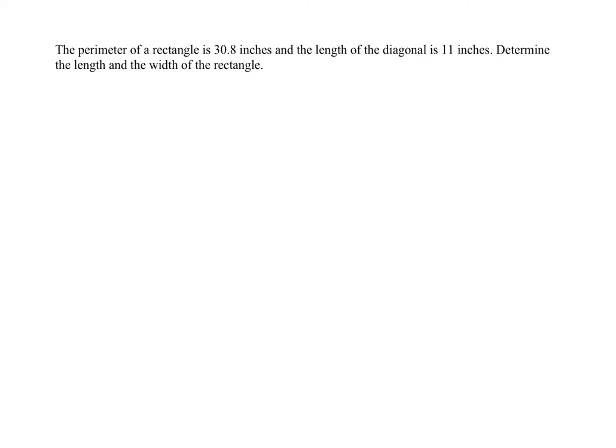The perimeter of a rectangle is 30.8 inches, and the length of the diagonal is 11 inches. Determine the length and the width of the rectangle.